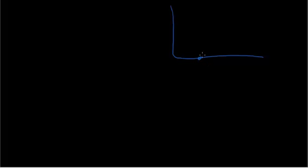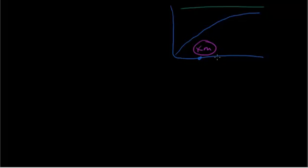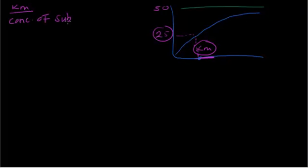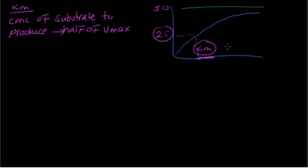Now let's talk about Km. You know this curve well — the x-axis is substrate concentration and the top of the curve is Vmax. Km is on the x-axis. Km is the concentration of substrate required to produce half of the Vmax. Notice that Km is the concentration to produce half of Vmax, not the whole Vmax.